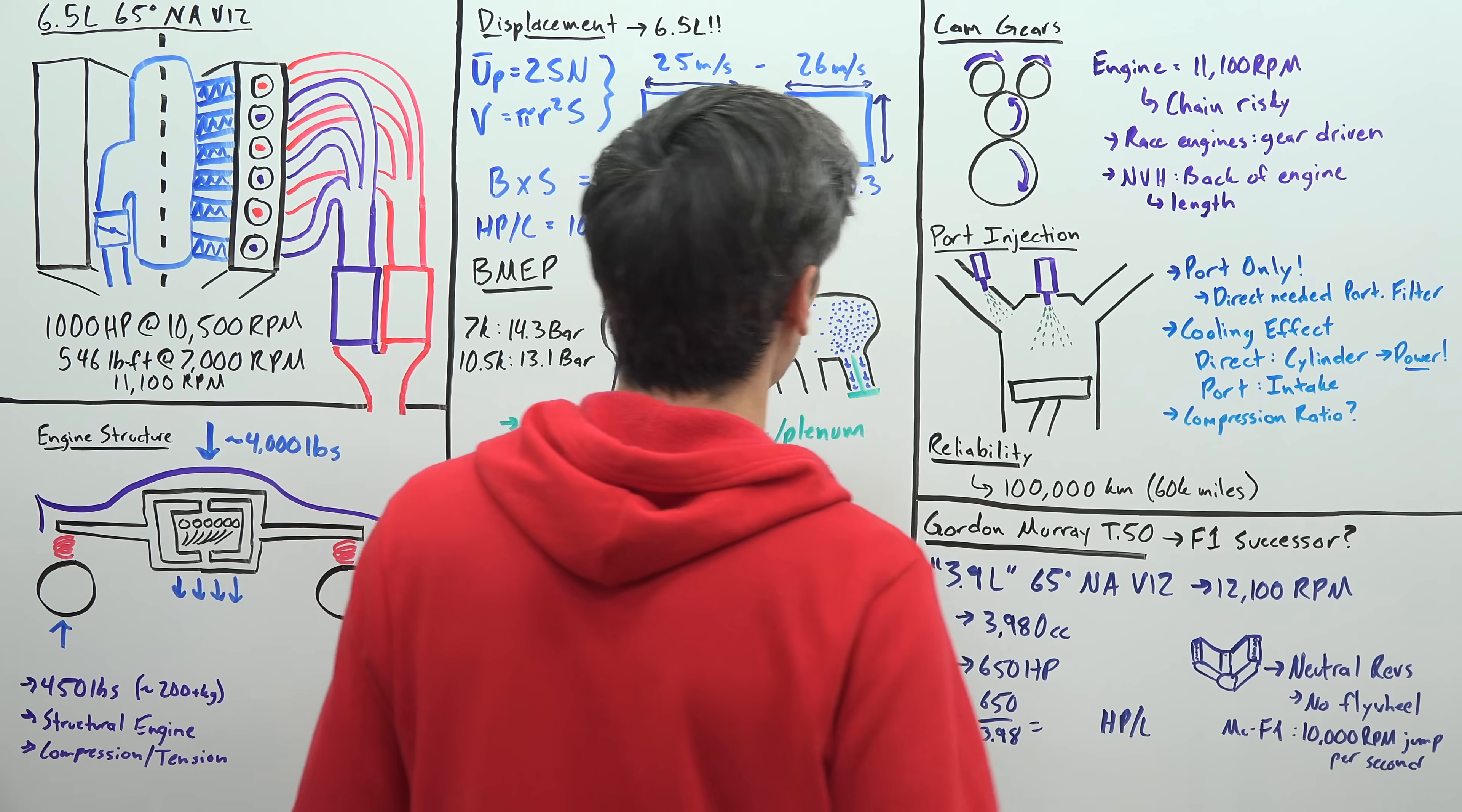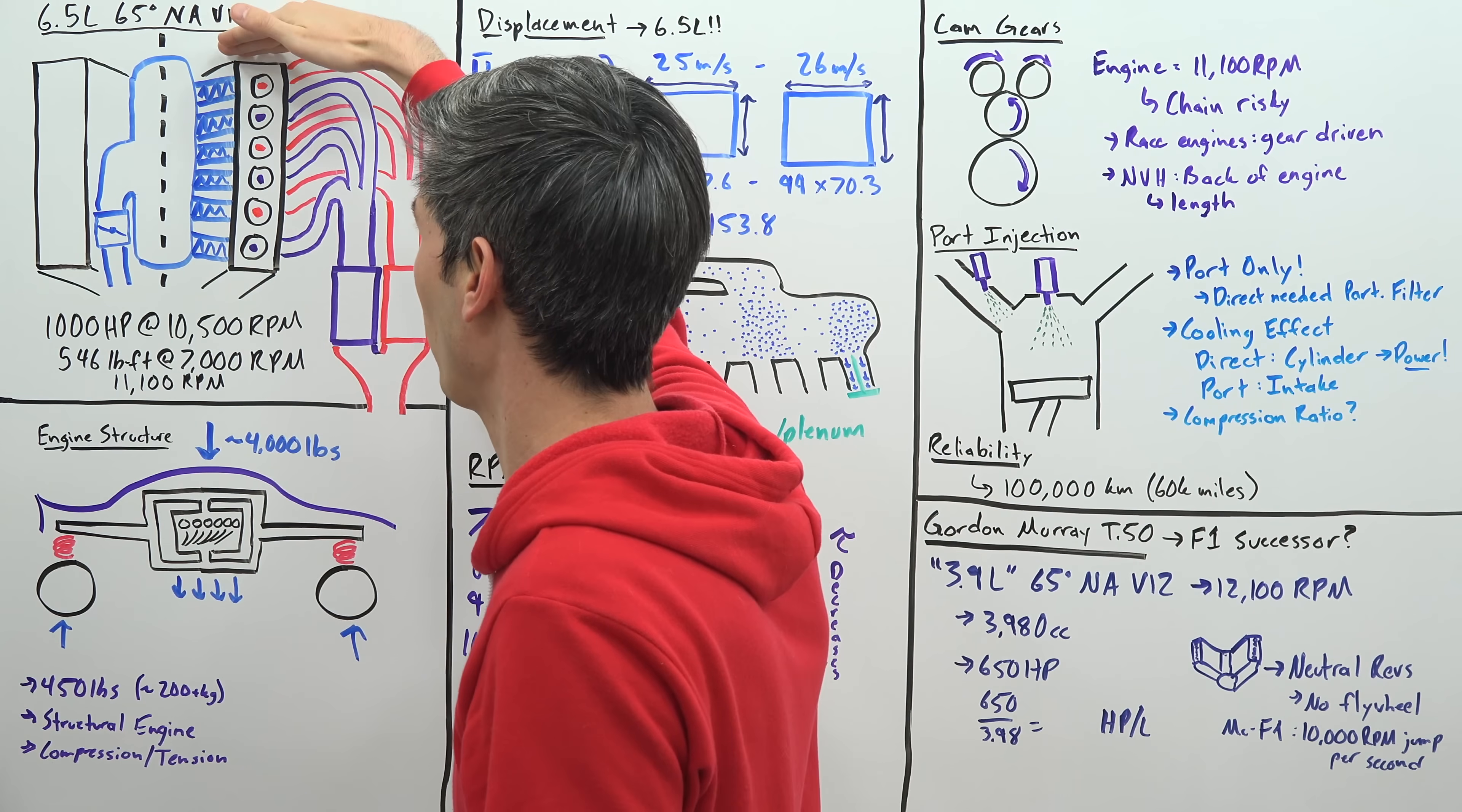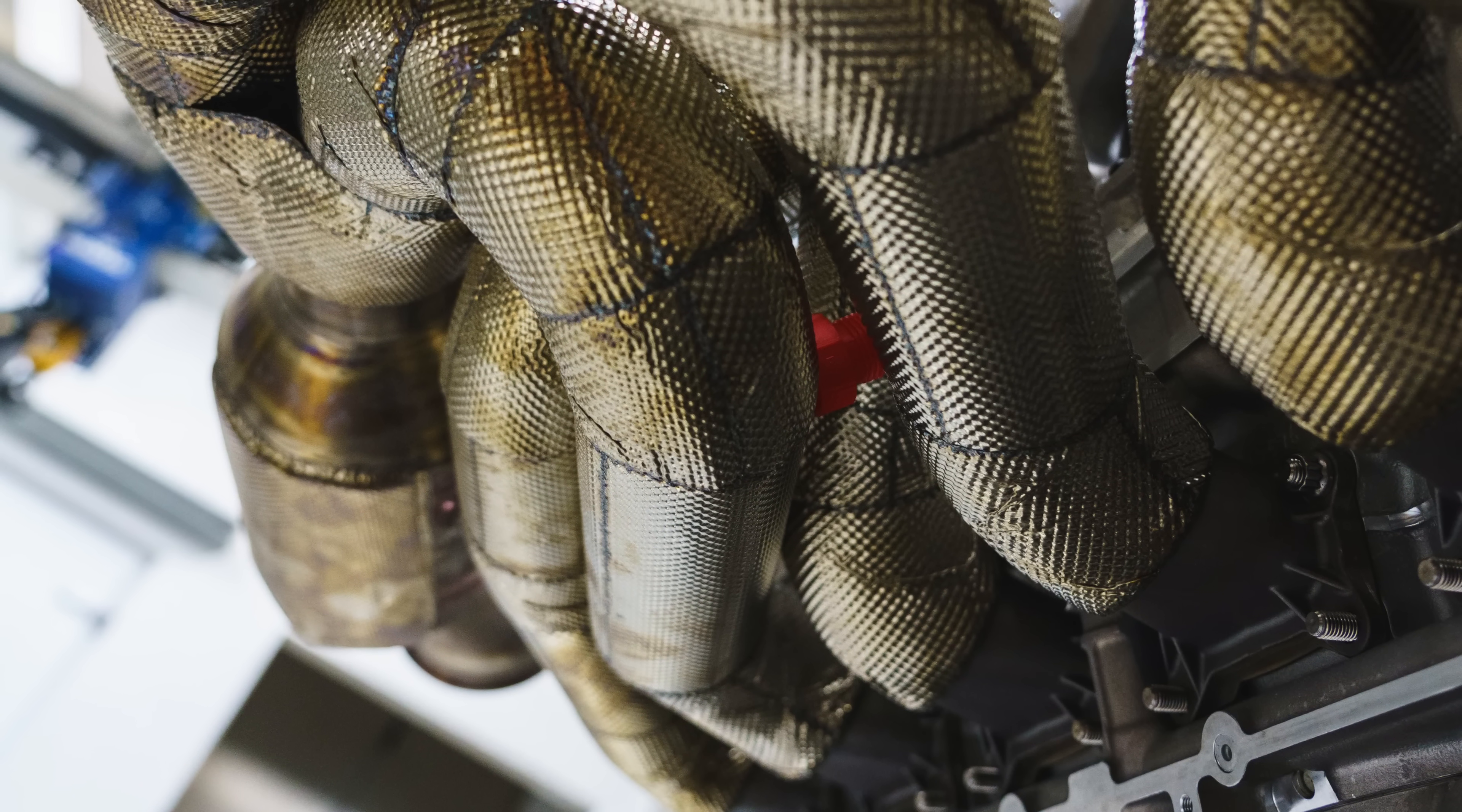And one of the interesting things about how they implemented it is that it's actually at the back of the engine. Usually you will find these timing gears, it would make more sense for them to go at the other end of the engine, for packaging reasons it would keep things a little bit shorter. But because that would be right behind the driver, you'd have these gears all right behind the driver sitting in that cockpit, the NVH, the noise and vibration, this wouldn't be ideal to have right behind that driver when you'd rather probably hear that screaming engine than some gear backlash.